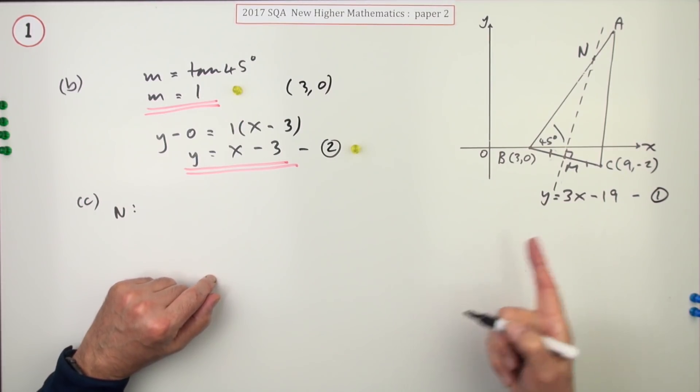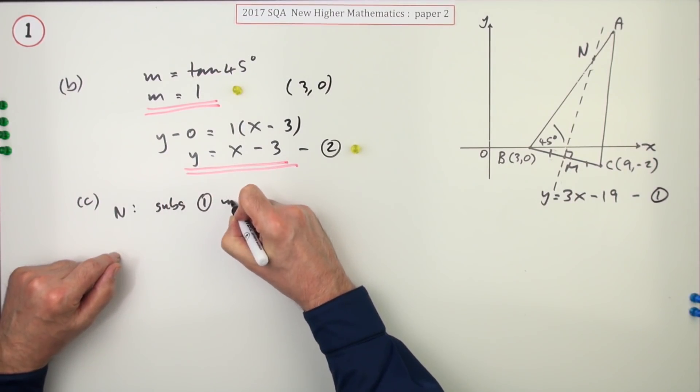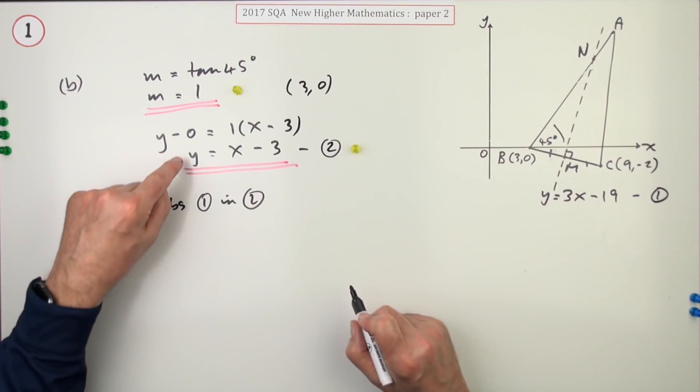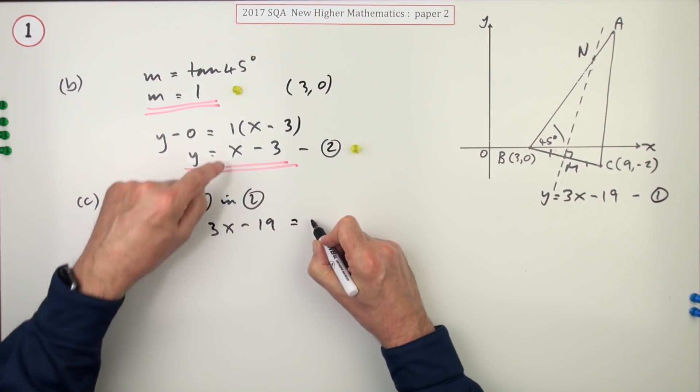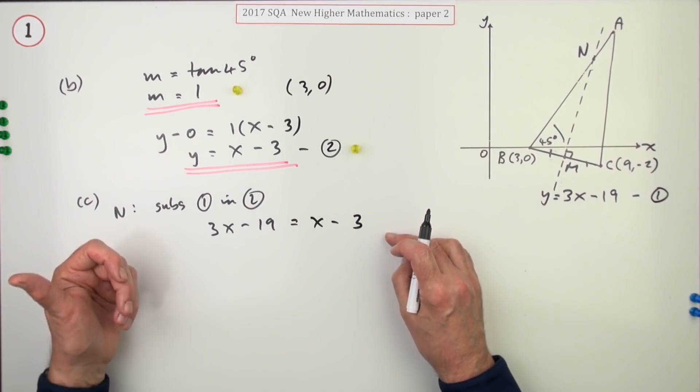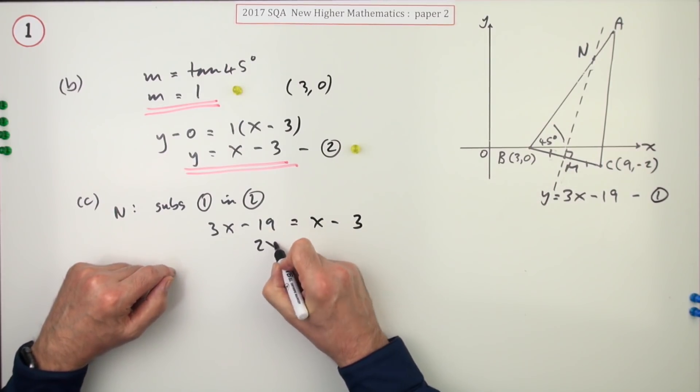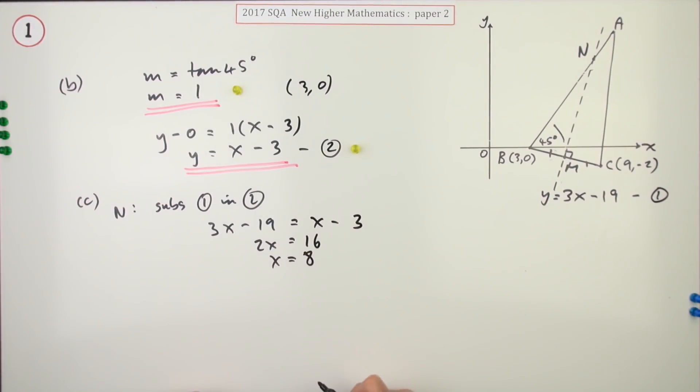Substitute 1 in 2. So that means I'm going to replace y with 3x - 19. 3x - 19 will equal x - 3. Now there's only two marks for this, and the way they're marking it is you get one mark for x and one mark for y. So all of this. So taking that across you've got 2x. Taking 19 across gives you 16. So x equals 8. You get one mark for doing that.